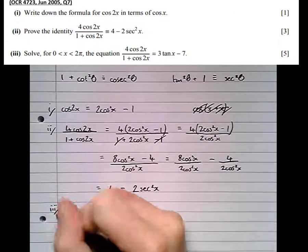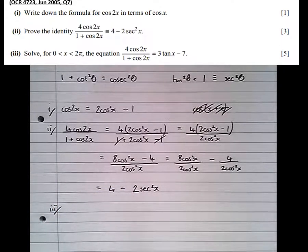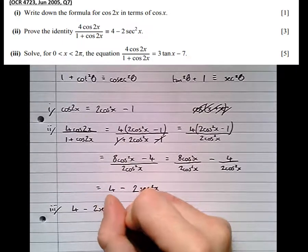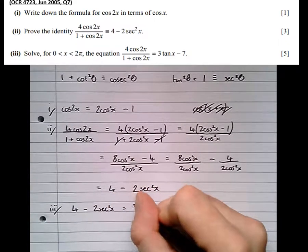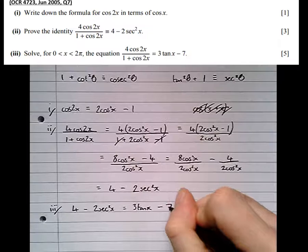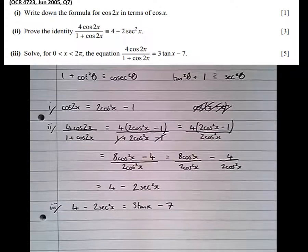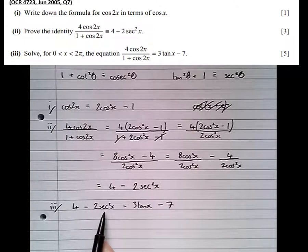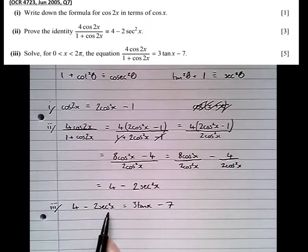Finally, part 3. Solve for 0 to 2 pi, that equation there. Well, notice we've just expanded that in part 2. So we get 4 minus 2 sec squared x, being equal to 3 tan x minus 7. Now we've actually tackled questions like this in AS for sine squared and cos squared. Actually, it's slightly more difficult now, because we're involving the reciprocal trig functions. But we've actually just learned at the start of this tutorial an identity that allows us to change sec squared x into tan squared x's, then allow us to solve this as a quadratic.